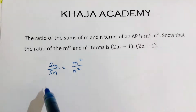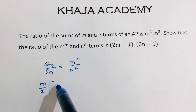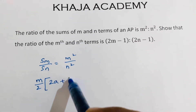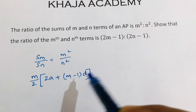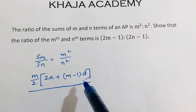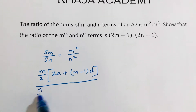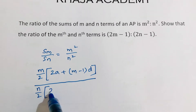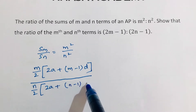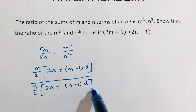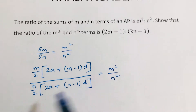Sum of m terms formula is m by 2 into 2a plus m minus 1 into d, divided by sum of n terms n by 2 into 2a plus n minus 1 into d, equals m square by n square.